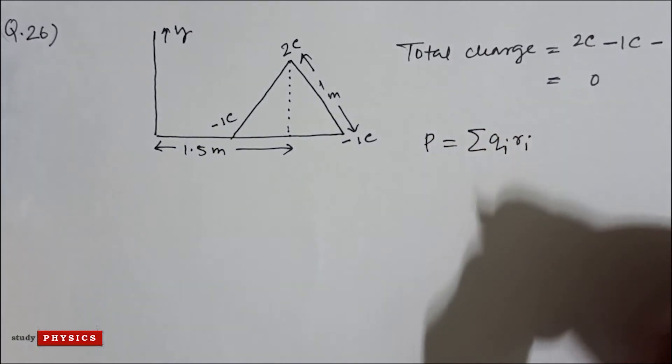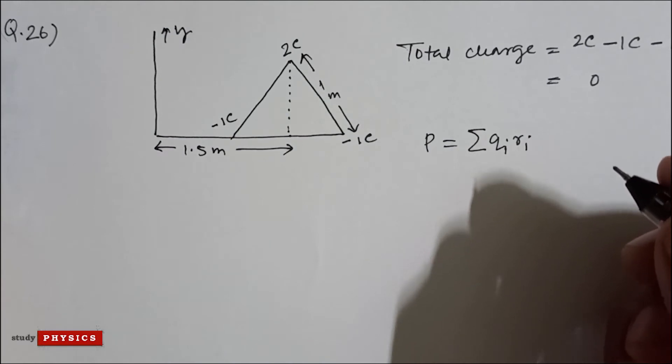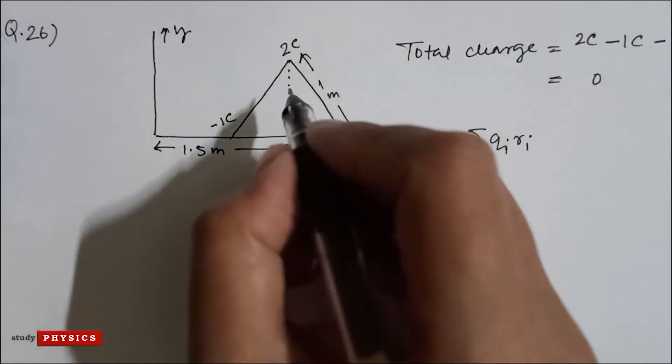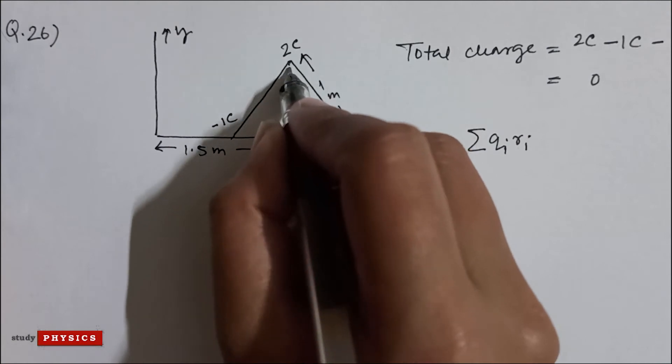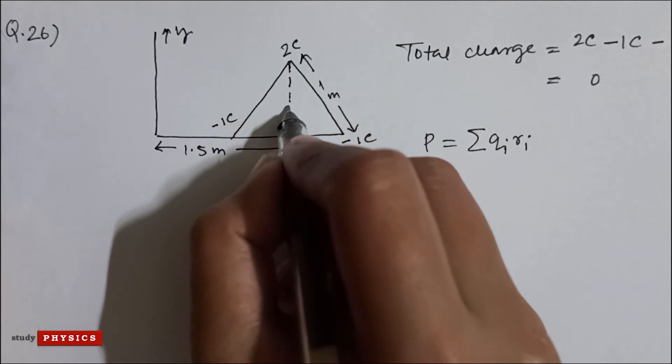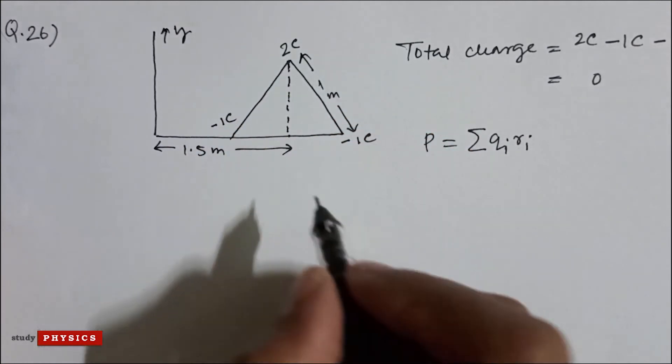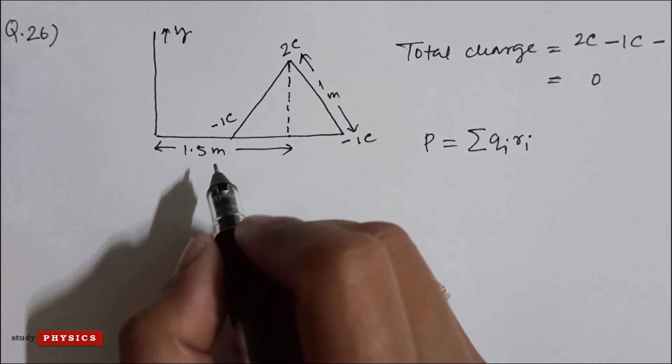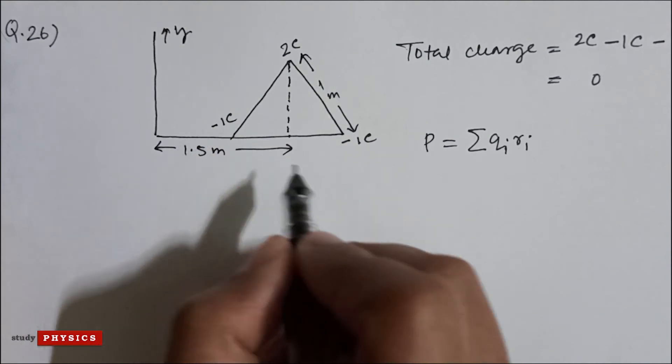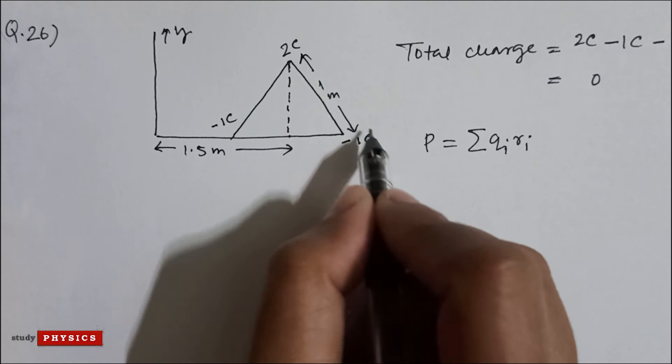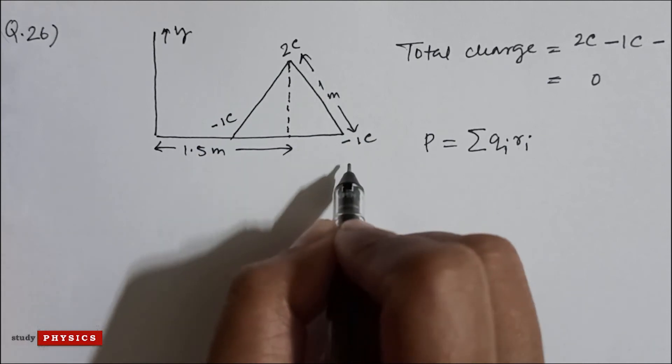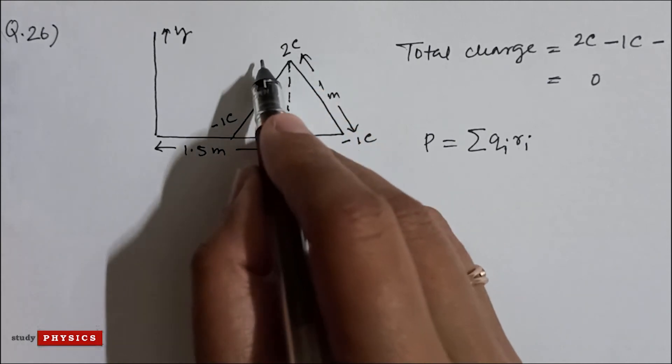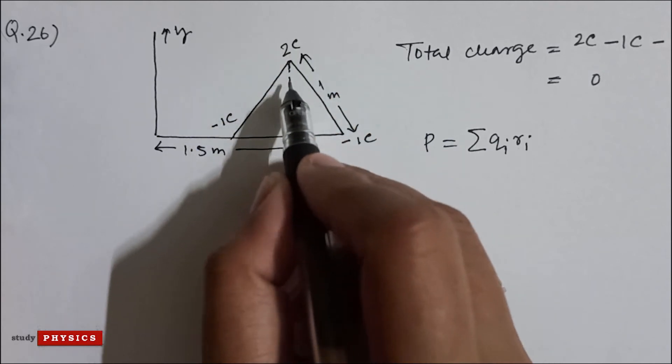Here they have asked for the electric dipole moment about the marked origin along the y direction. That means in this case, minus 1C and minus 1C, these two charges will not contribute in this scenario. So we have to deal with only 2 coulomb in the y direction.